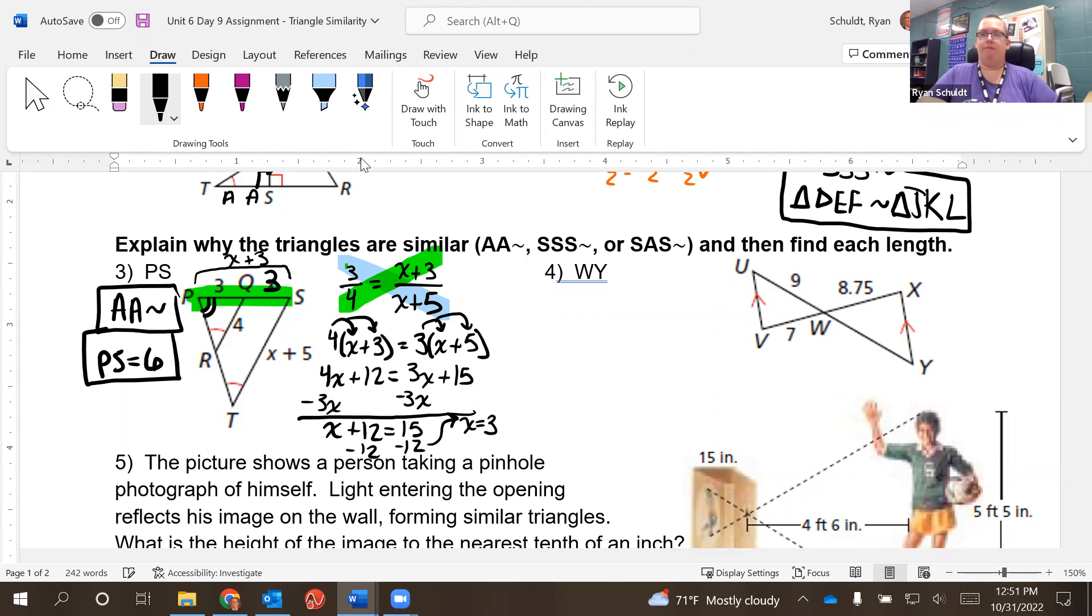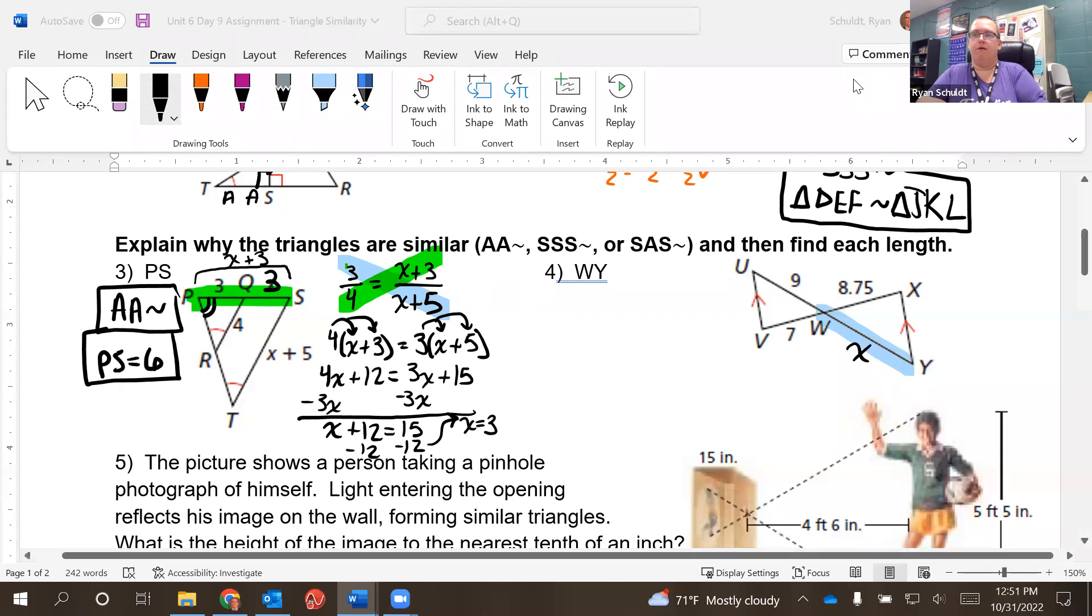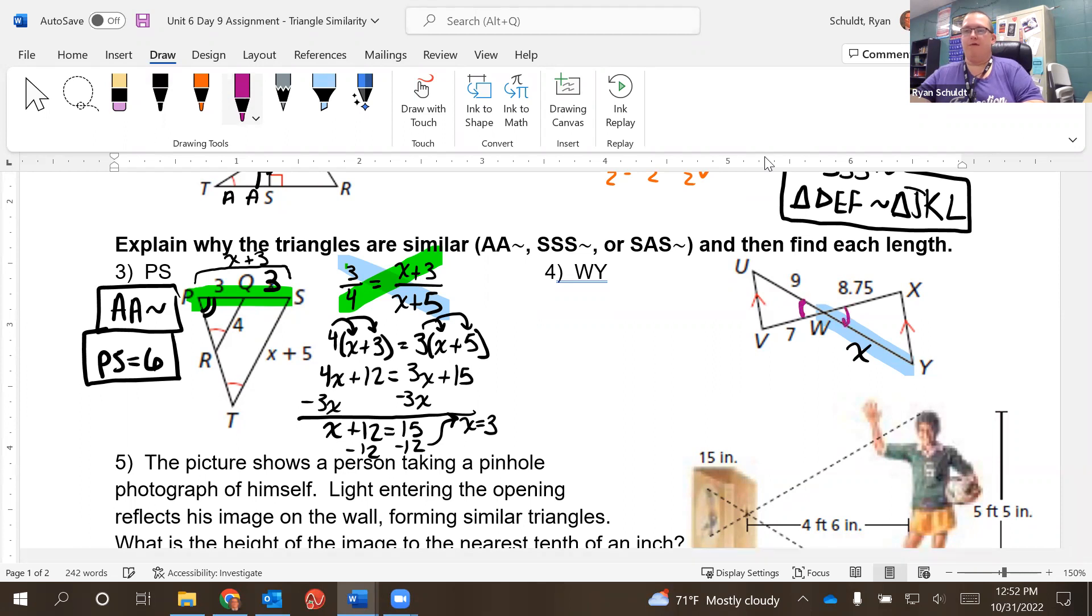Okay. Now for WY. WY is right here. I'm going to call that X. Let's see. First, we have to say how they're congruent. Well, not congruent. Similar. We've got some vertical angles. So let's mark those. Those are automatic.